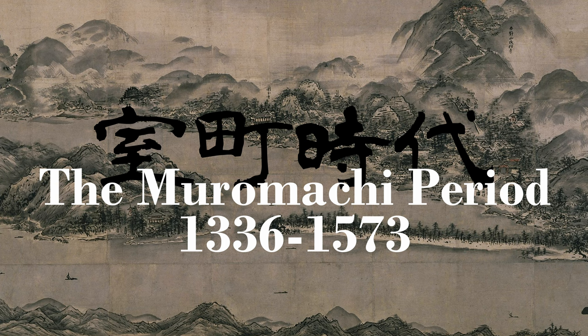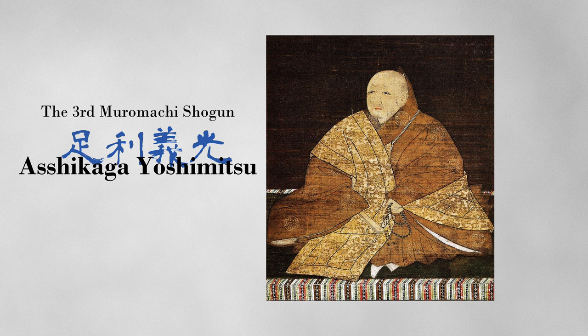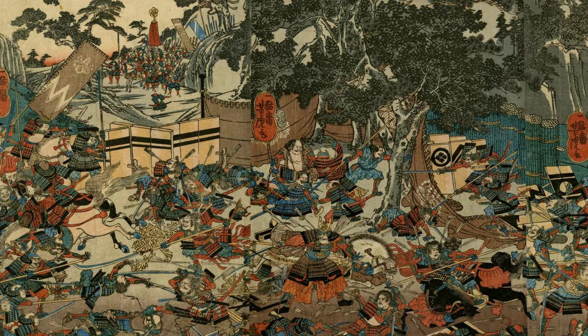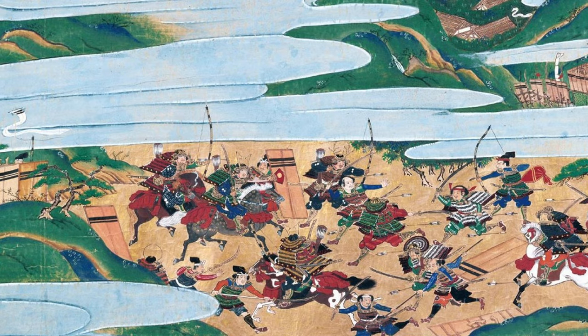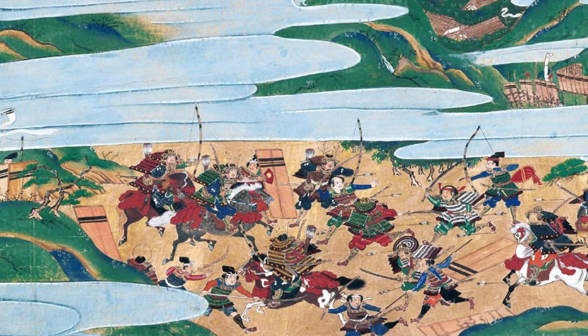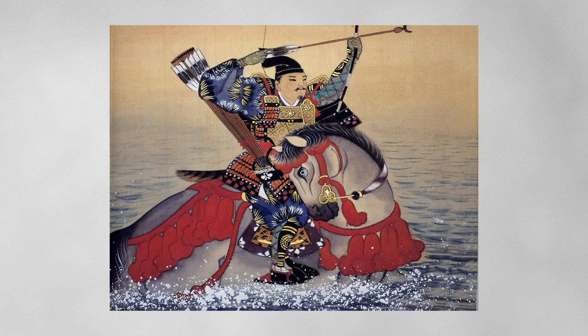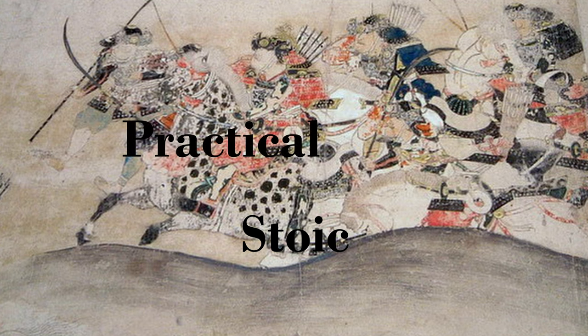In a later era, Zen was easily accepted by the shogunate because it's atheistic, unlike other religions or other schools in Buddhism. It was a turbulent era of samurai. They were dealing with their lives, always in a dead-or-alive situation — not born with power, but rose up by themselves with their arms, skills, and intelligence. So they were very practical, and it was harder for them to believe in gods. But Zen didn't interfere with those who were rising up, because it's very stoic, practical, and introspective.